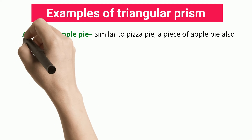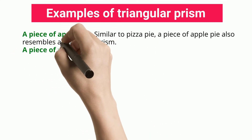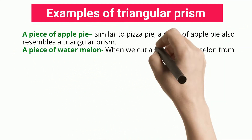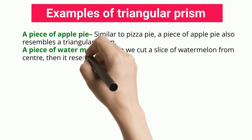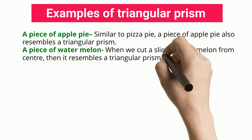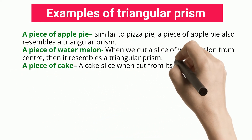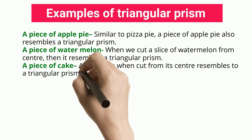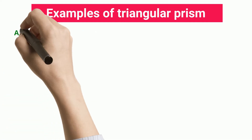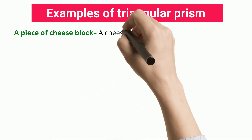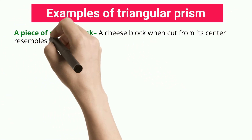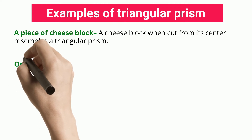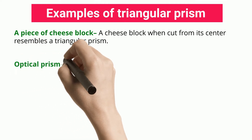A piece of apple pie: similar to pizza pie, a piece of apple pie also resembles a triangular prism. A piece of watermelon: when we cut a slice of watermelon from the center, it resembles a triangular prism. A piece of cake: a cake slice when cut from its center resembles a triangular prism.